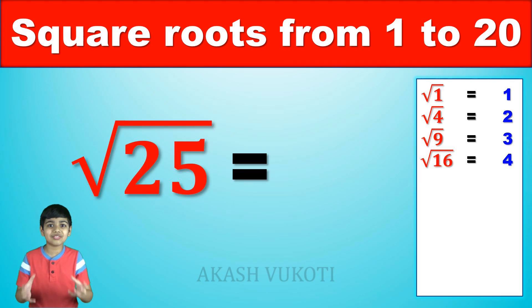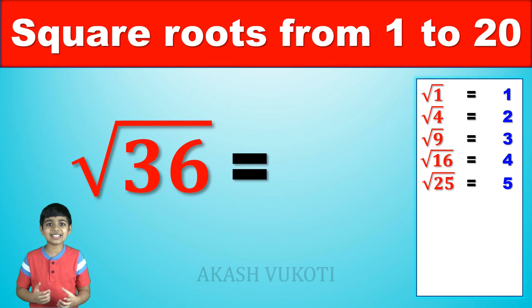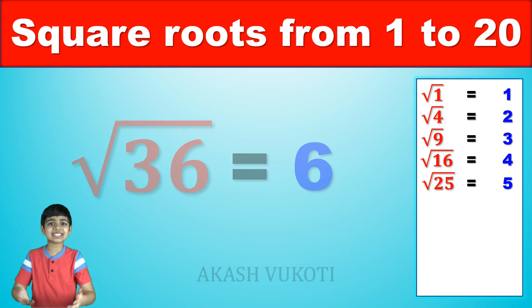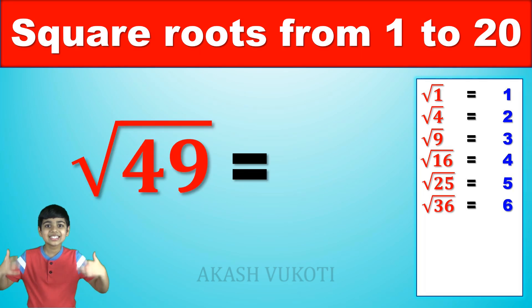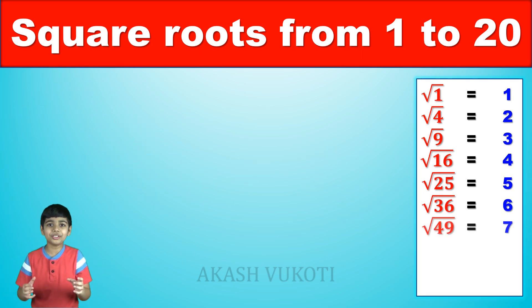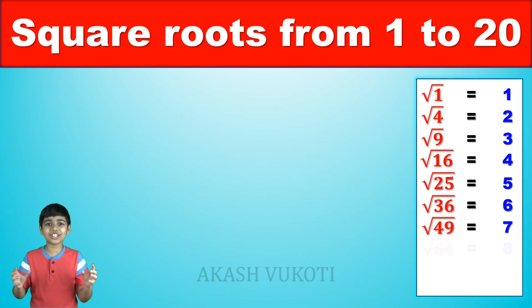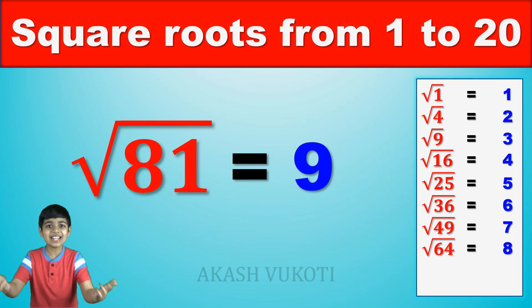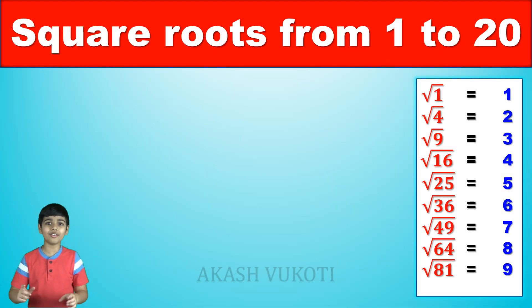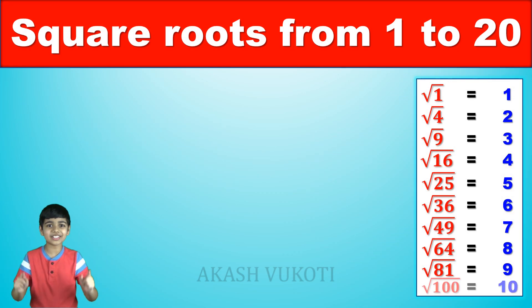The square root of 25 is 5. Great job. The square root of 36 is 6. The square root of 49 is 7. The square root of 64 is 8. Let's go. The square root of 81 is 9. The square root of 100 is 10. We're halfway there.